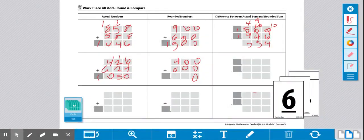0 plus 0 is 0. 0 plus 0 is 0. 6 plus 4 is 10. So my rounded number is 1,000.